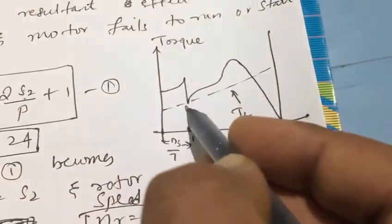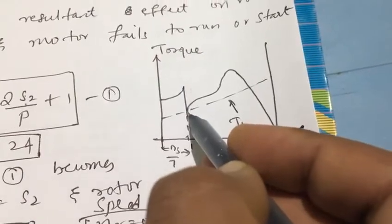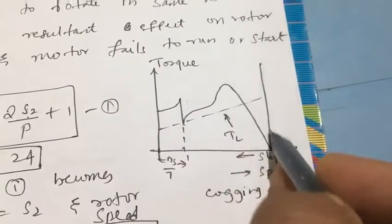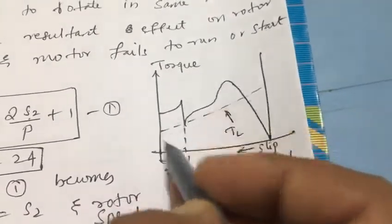then this is going to reduce the speed of the motor. So here, the motor speed is going to be reduced. This is your usual motoring zone.